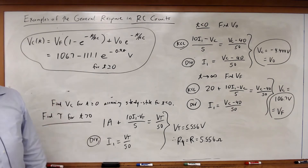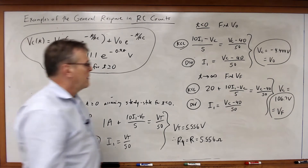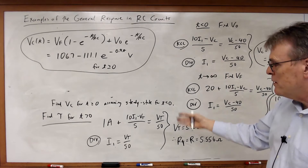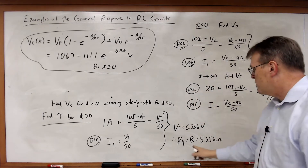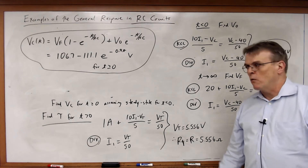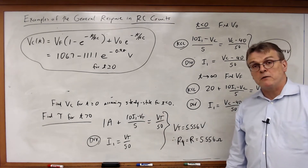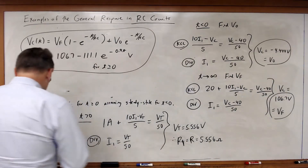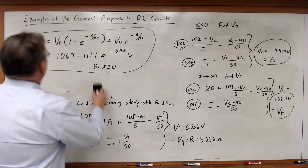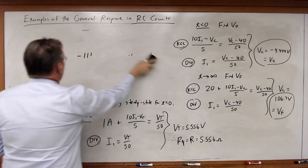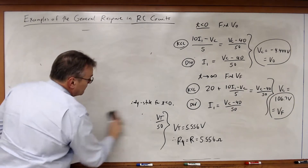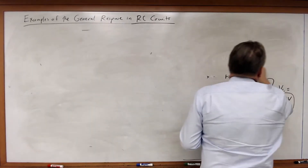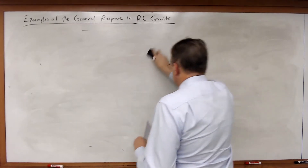Here we see an application of the general response — the general solution. I've got a non-zero initial condition and a non-zero final condition, but I just need to calculate three quantities: the initial voltage, the final voltage, and the value of R across the capacitor for t greater than zero after the switching event. Now let's look at another example.